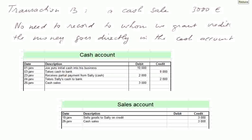Transaction 13: a cash sale of 3,000 euros. The cash account is debited 3,000 euros. These items are sold at 100 euros apiece, so 30 items leave the inventory and go to a client. There is no need to record the client's name since the money goes directly into the cash account. The sales account is credited 3,000 euros, bringing total sales so far to 6,000 euros.